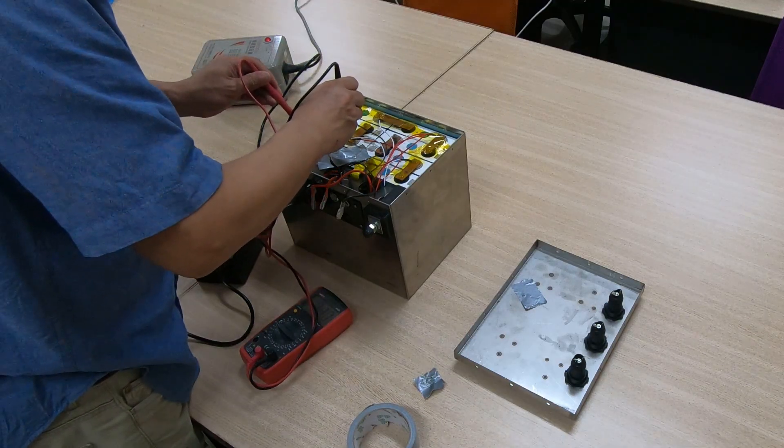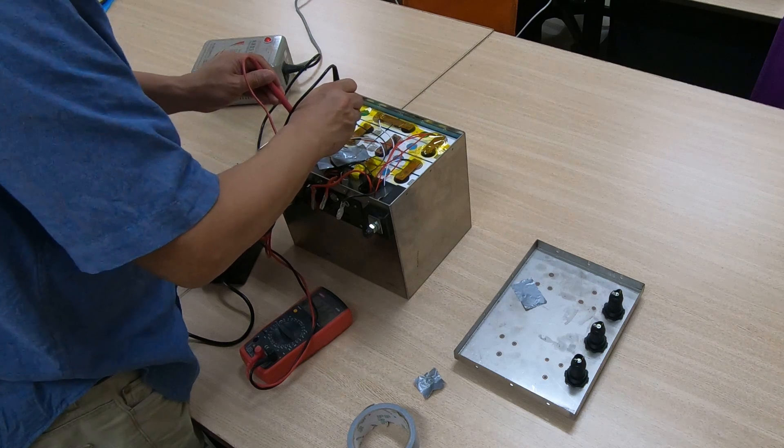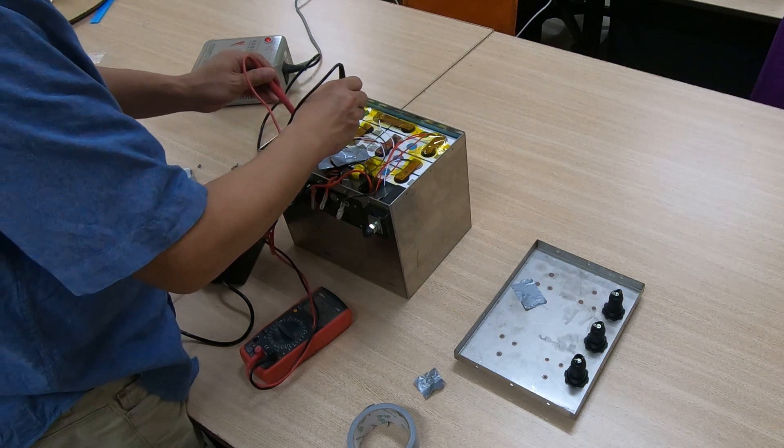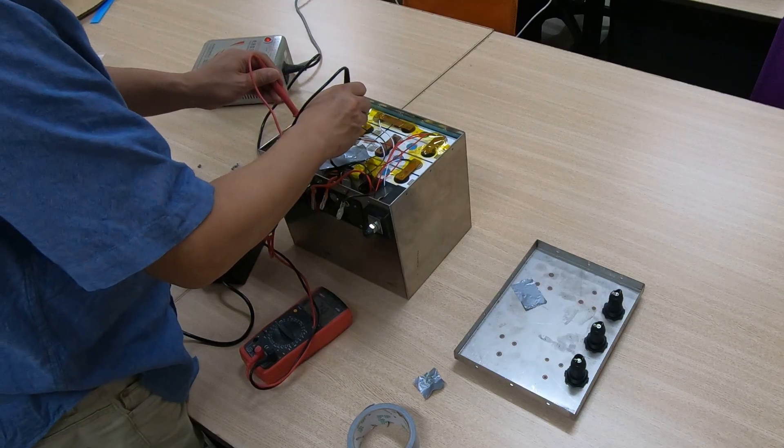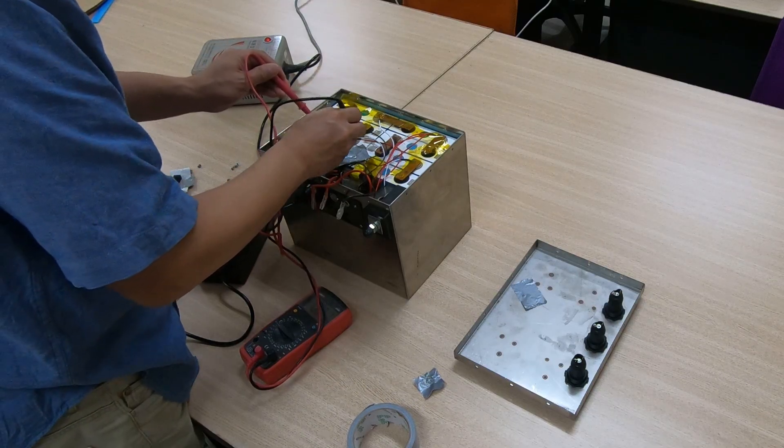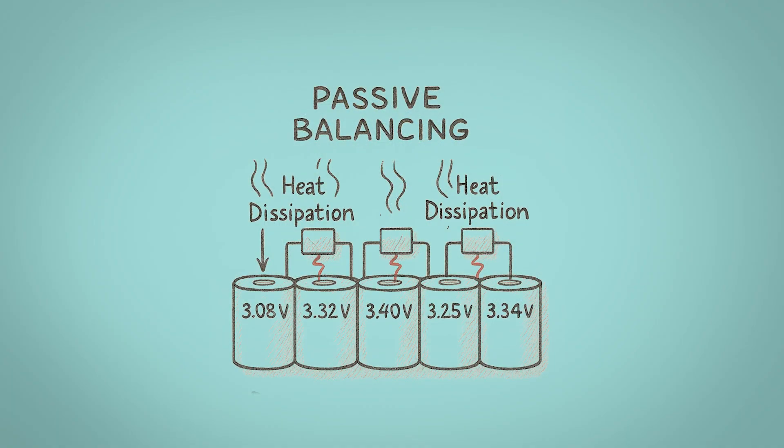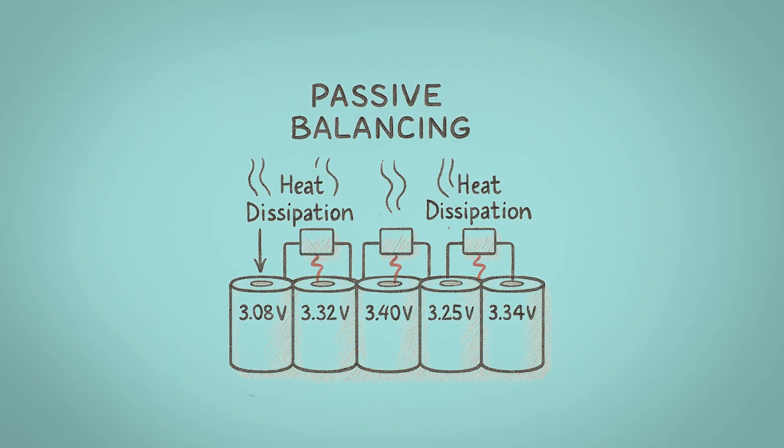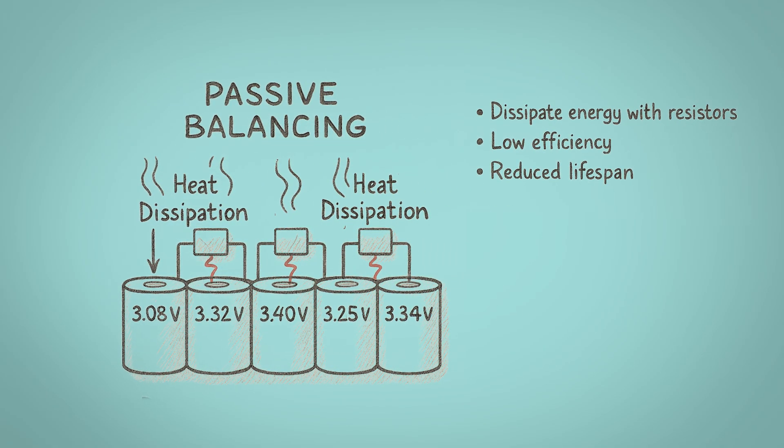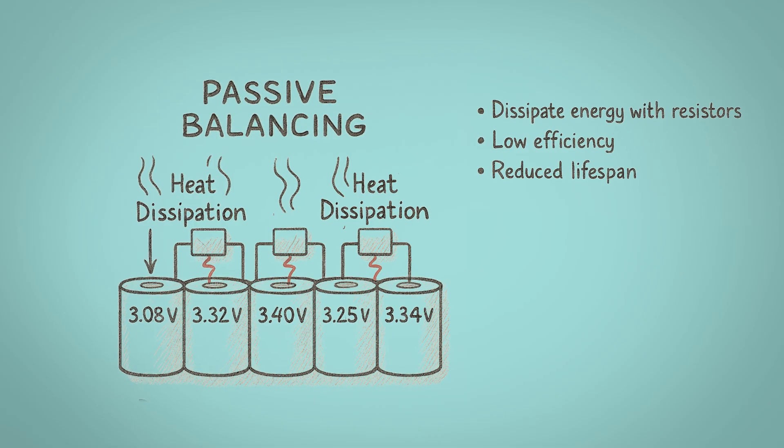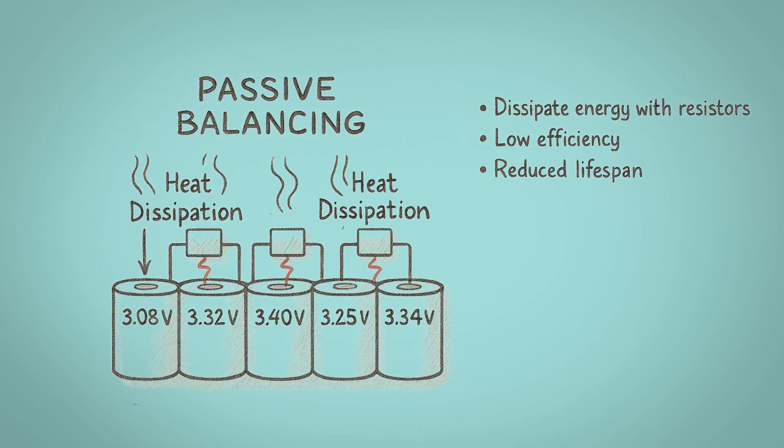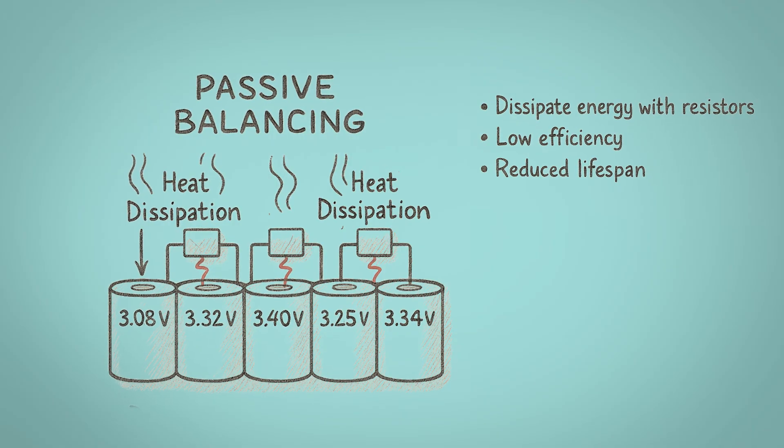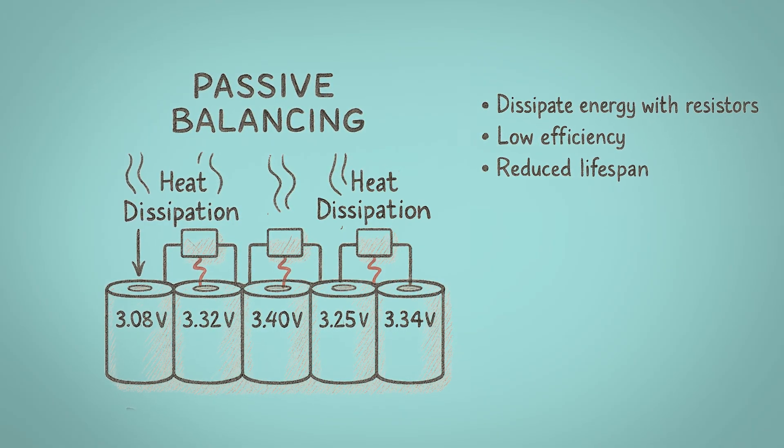However, after repeated charge and discharge cycles, I noticed a voltage imbalance developing between the eight individual cells. Such voltage differences, if they persist over time, can shorten the battery's overall lifespan. In the original design, I used a passive balancing system which equalizes cell voltages by dissipating excess energy as heat, an approach with relatively low efficiency. After prolonged use or frequent cycling, the cells showed significant voltage deviations, impacting the system's overall performance.